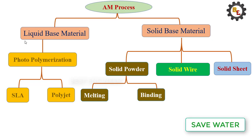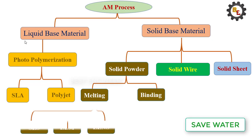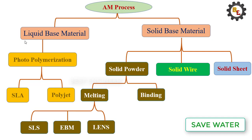In the melting type there are three technologies: first, SLS — Selective Laser Sintering; second, EBM — Electron Beam Melting; and third, LENS — Laser Engineered Net Shaping. Under the binding type, there is one technology called 3D Printing.